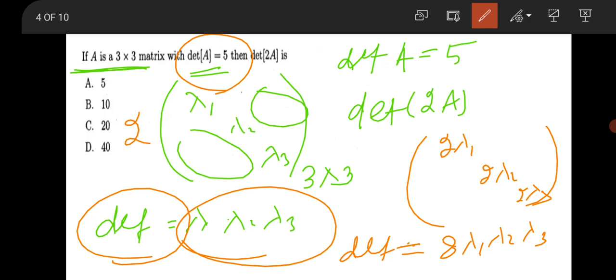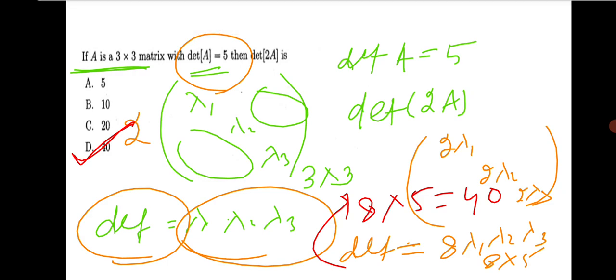And your λ1 λ2 times λ3, it will be 8 times 5, that is 40. The answer will be 40.